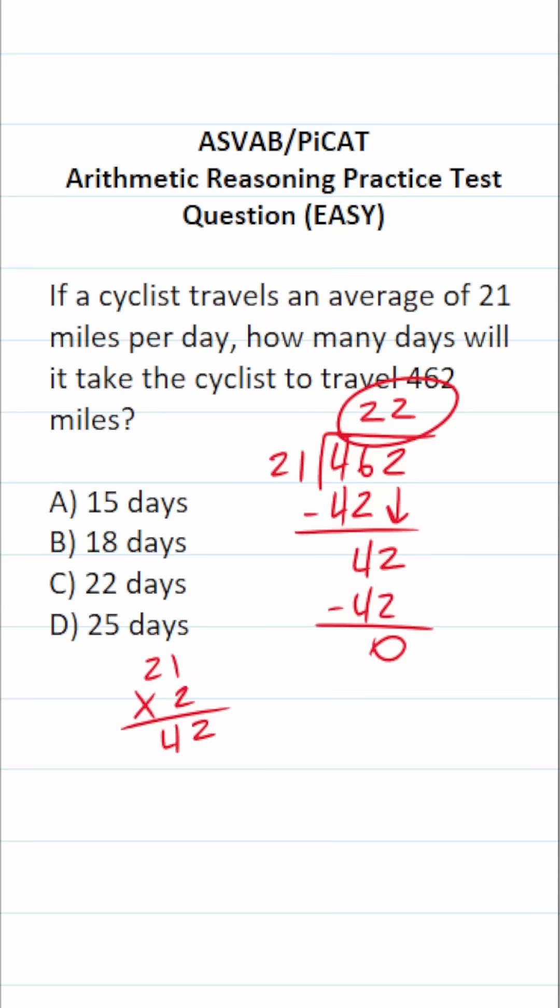So in other words, it's going to take this cyclist C) 22 days to travel a distance of 462 miles.